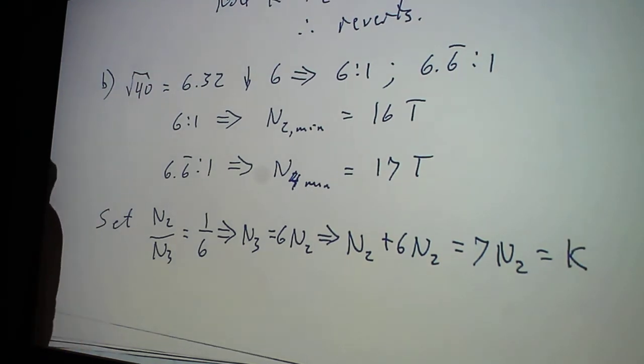Which means that N2 plus 6N2 equals 7N2, which equals my K. This is where I'm doing the N2 plus N3 part right there.